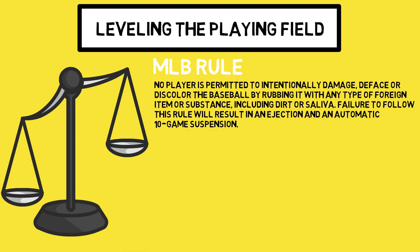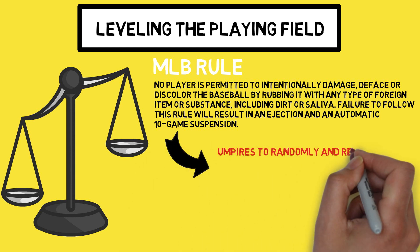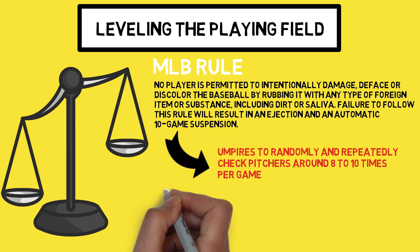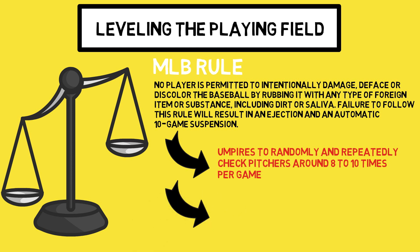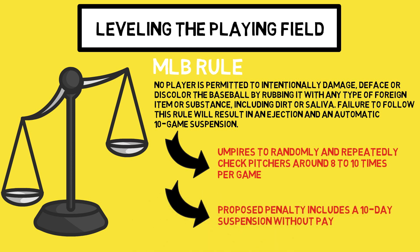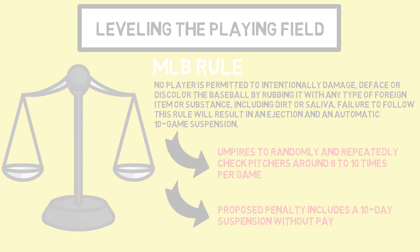As of last week, when a lot of this stuff was brought to light, the MLB has reportedly reached out to clubs to inform them that umpires will now be much more aggressive at enforcing the rule by doing random and repeated checks of pitchers around 8-10 times per game. If you're caught, the current rumor is that the penalty will be a 10-day suspension without pay. Reports show this could be initiated at the major league level as early as next week, so we have to wait and see how this affects our sport.